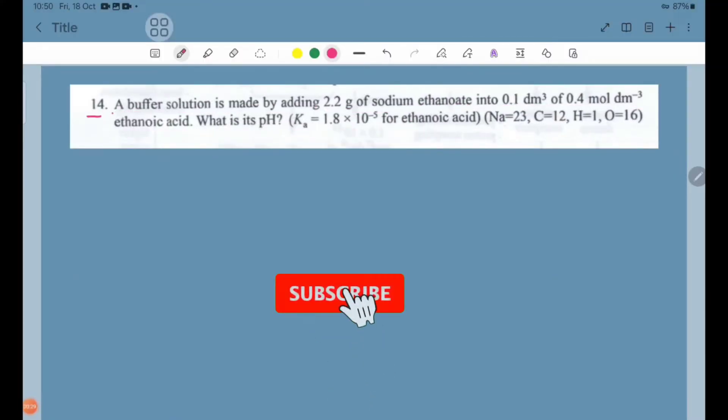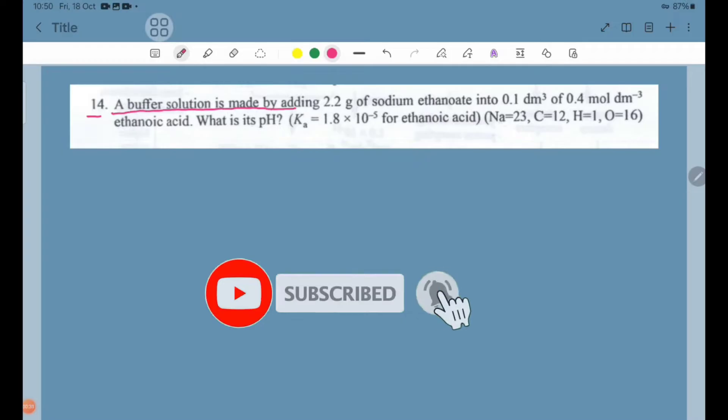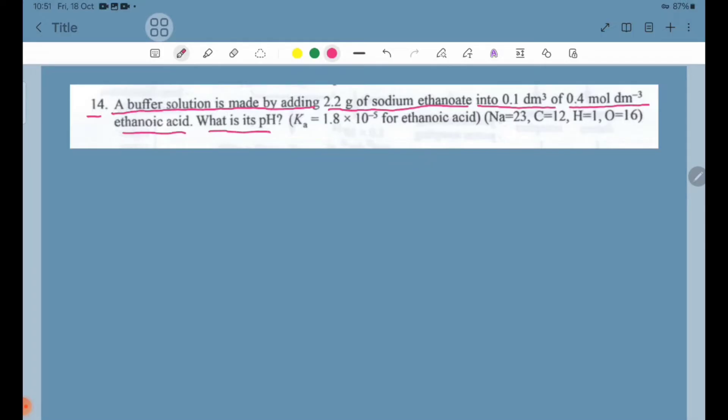Number 14: A buffer solution is made by adding 2.2 grams of sodium ethanoate into 0.1 dm³ of 0.4 M ethanoic acid. What is its pH? Ka equals 1.8 into 10 power minus 5 for ethanoic acid.